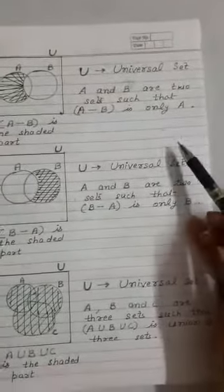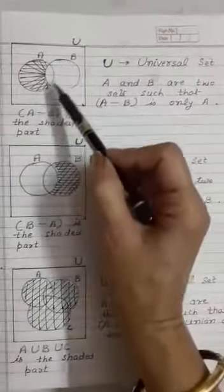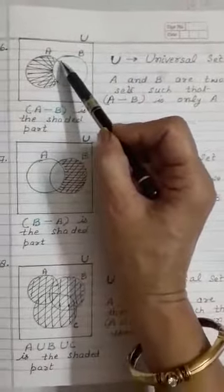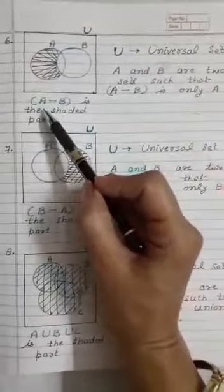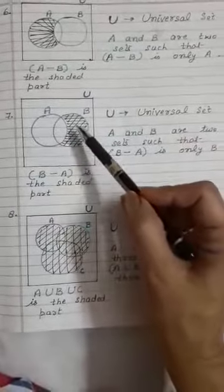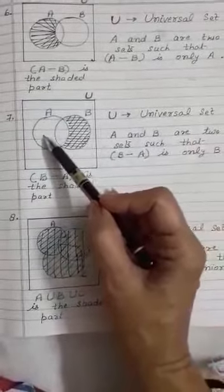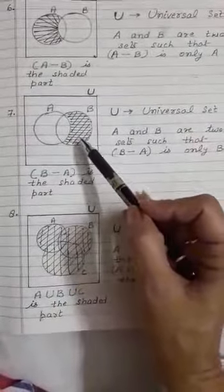Disjoint matlab alag alag, nothing is common. And next, you can see here it is A minus B. A ke andar se B ke sari elements nikal do—the common part is subtracted. That's why we have written A minus B. And similarly, B minus A means B ke andar se common part ya A ka part nikal do. That's why this area is called B minus A.